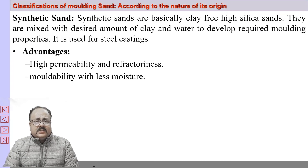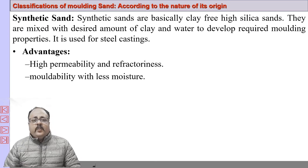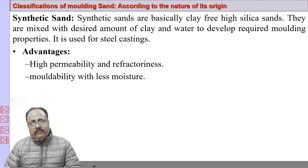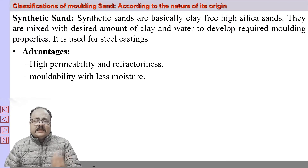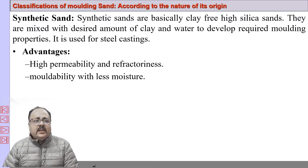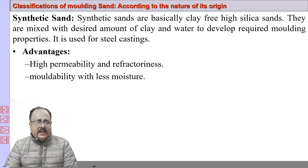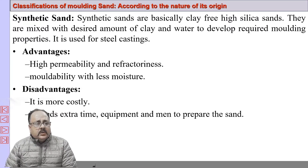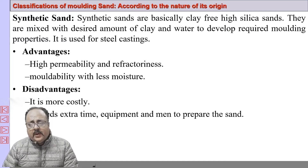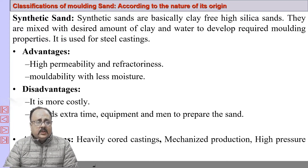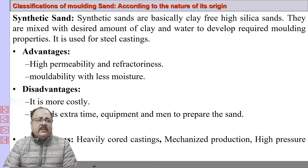Then we have synthetic sands, which are made by mixing bentonite or clay with silica sand grains and moisture. Advantages: highly permeable, high refractoriness, and good moldability with less moisture. Disadvantages: costly, and requires extra time, equipment, and manpower to prepare. Applications: heavy cold casting, mechanized production, and high pressure molding.